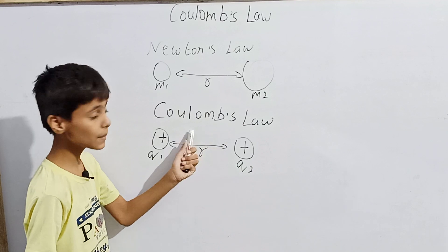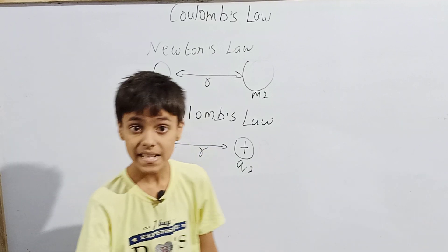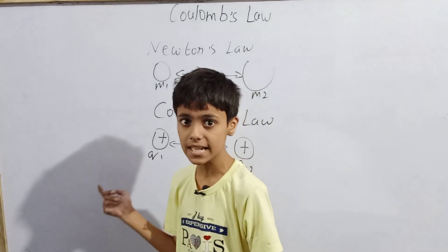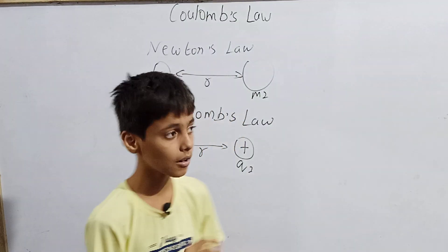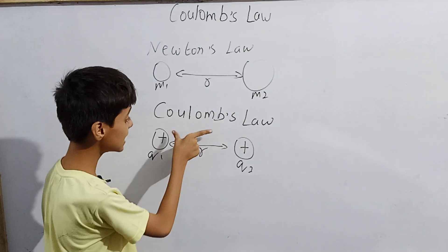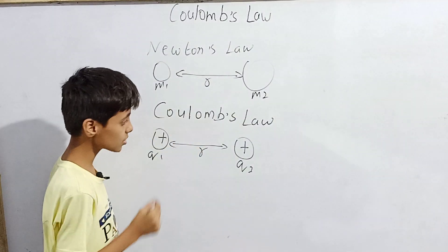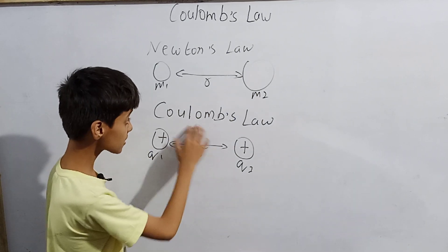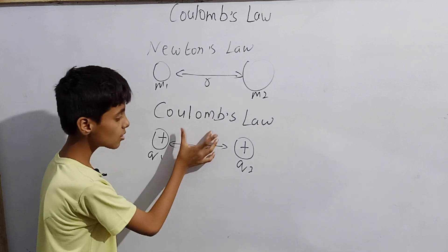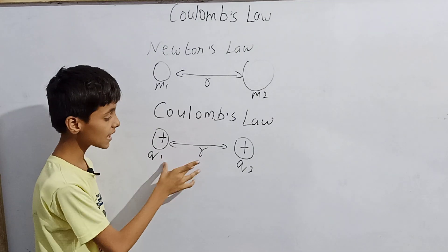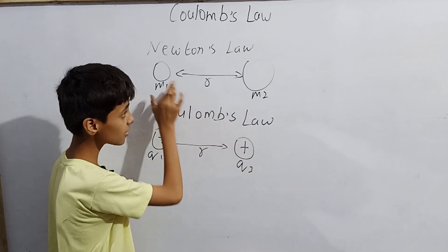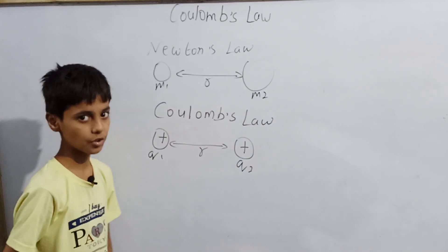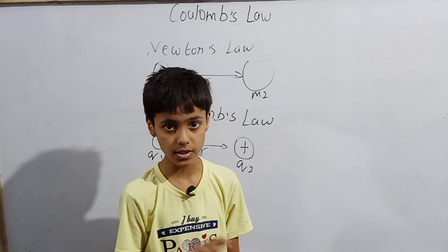What Coulomb's Law says is that there will be a force — attractive or repulsive. In Newton's Law, gravitation is always attractive, but this electrostatic force may be attractive or repulsive. Between those two charges there will always be applied an electrostatic force, also called the Coulombian force. This Coulombian force is directly proportional to the product of the charges — here it was masses, here it is charges — and is inversely proportional to the square of the distance between them. Both laws follow the inverse square law.